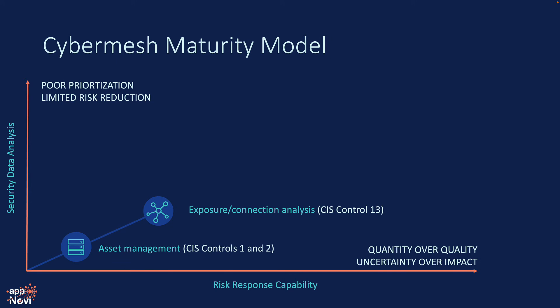Once we have visibility over assets, we need to understand how they connect. One of the best ways to do this is using NetFlow data already being generated. Once we understand the connections, we can start to map out critical connections for important assets, such as application servers. This typically aligns to CIS Core Control 13.